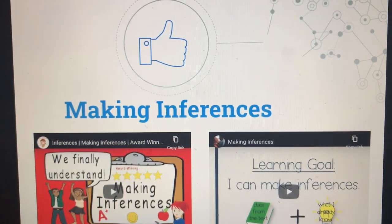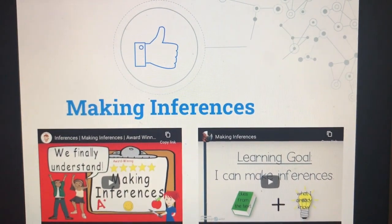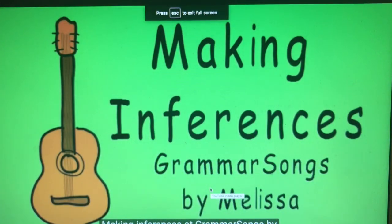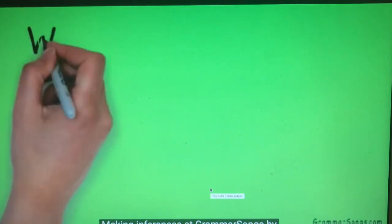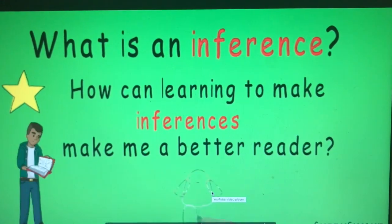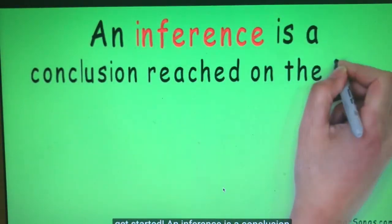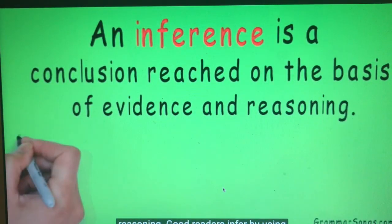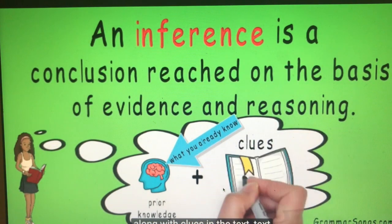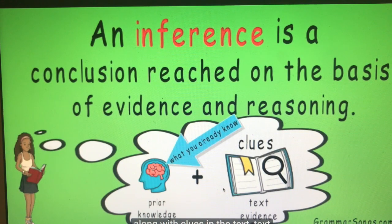Here are two videos I found about making inferences that I think you guys will like. You'll understand how to do it a little bit better after watching these. At Grammar Songs by Melissa: What is an inference? More importantly, how can learning to make inferences make me a better reader? An inference is a conclusion reached on the basis of evidence and reasoning. Good readers infer by using what they already know — prior knowledge — along with clues in the text, called text evidence, to form an idea.